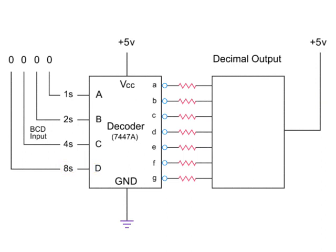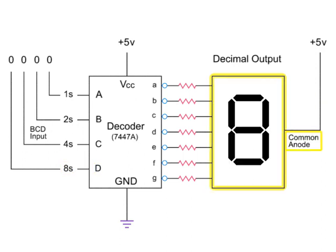The decoder is connected to a common anode seven-segment LED display with outputs wired through 150-ohm limiting resistors.